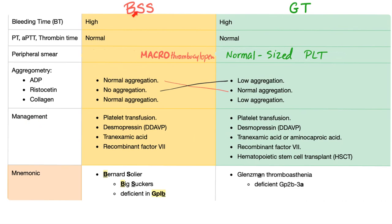Management: if the patient has poor platelets, give platelet transfusion — this applies to both. Desmopressin is used in both because it releases von Willebrand factor and helps with adhesion. Tranexamic acid is an antifibrinolytic used in both. Recombinant factor 7 can help either one. Hematopoietic stem cell transplant has been tried successfully in Glanzmann's.